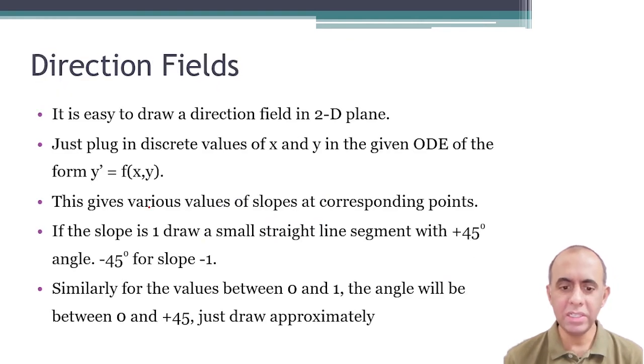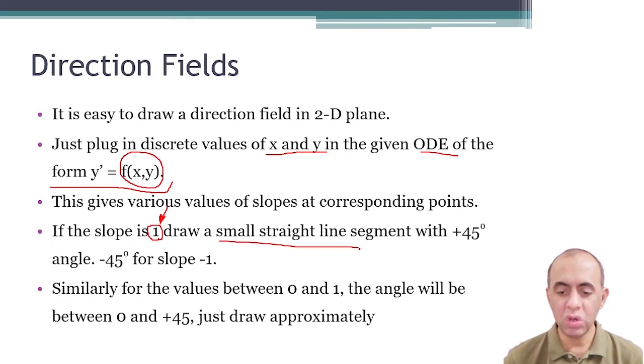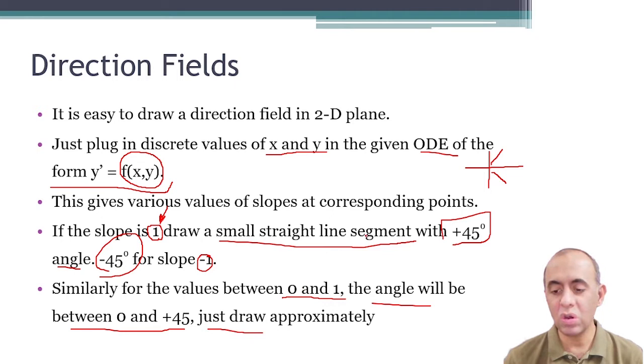It is easy to draw a direction field in a 2D plane. You just plug in the discrete values of x and y in the given differential equation of the form y' = f(x, y), which gives you various slopes at corresponding points. If the slope is one, then what you do is you draw a small straight line segment with 45 degrees angle. And if you get minus one, you draw a straight line segment of minus 45 degrees. So plus 45 would be like this line segment and minus 45 would be this line segment. Similarly for the values between 0 and 1, the angle would be between 0 and 45, and we just draw approximately.